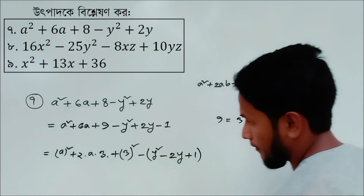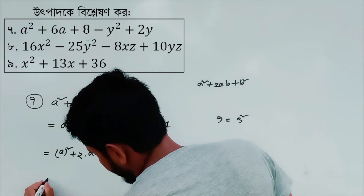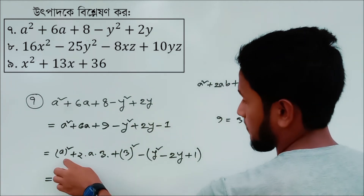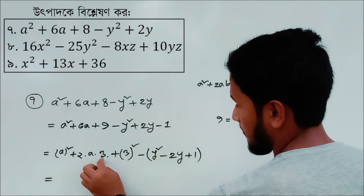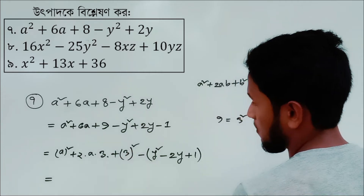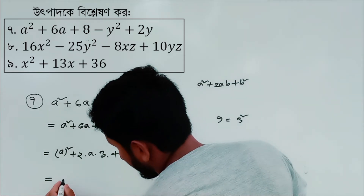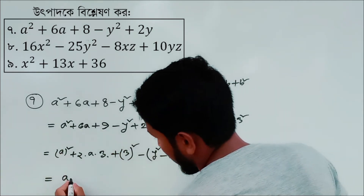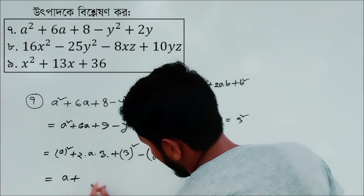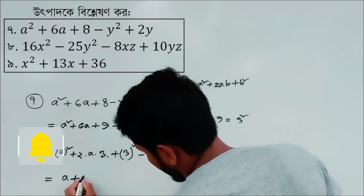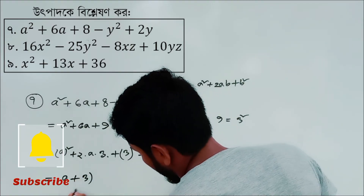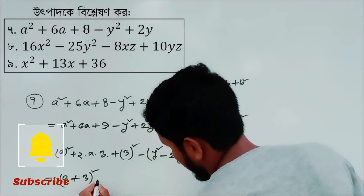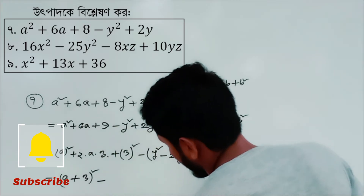Let's take a look at this. a squared plus 2ab plus b squared is equal to a plus b squared. Then minus.